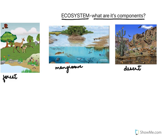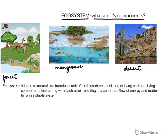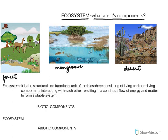Each of these systems is called an ecosystem. In an ecosystem, plants, animals, and living and non-living components continuously interact with each other. As they interact, there is a continuous flow of energy and matter. An ecosystem is a structural and functional unit of the biosphere consisting of living and non-living components interacting with each other, resulting in a continuous flow of energy and matter to form a stable system.